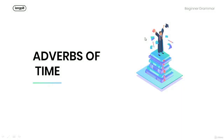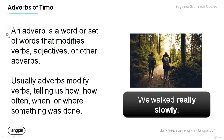Welcome to this tutorial. Today we're going to talk about adverbs of time. Remember that an adverb is a word or set of words that modifies verbs, adjectives, or other adverbs. Note that adverbs usually modify verbs, telling us how, how often, when, or where something was done. Have a look at the example: we walked really slowly. Note that the adverb 'slowly' modifies the verb 'walked' and tells us how we walked.